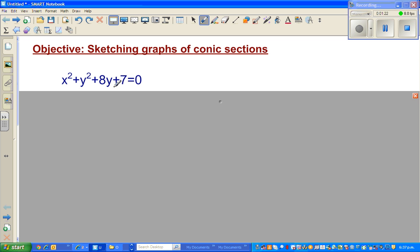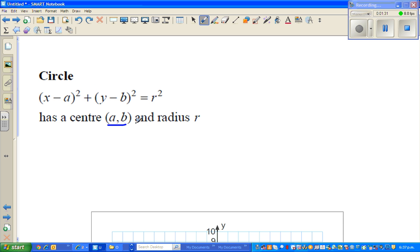The reason being, I know the equation of a circle, if I can write in this form, that is x minus a squared plus y minus b squared is equal to r squared, then a and b are the center. The center would be a comma b and the radius would be r.